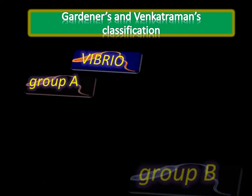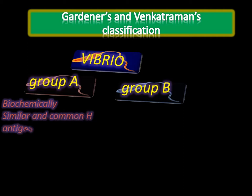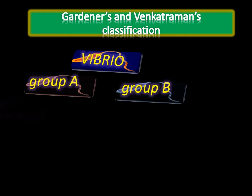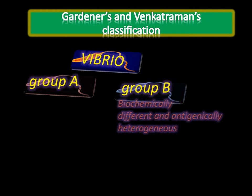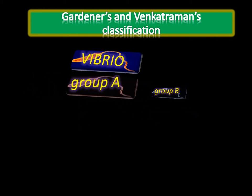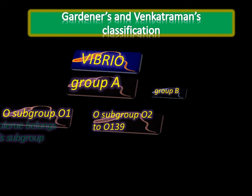In India, Gardner and Venkatraman classification is followed. Vibrio is divided into two main groups, group A and group B. Group A consists of biochemically similar organisms with a common H antigen. Group B consists of biochemically and antigenically heterogeneous antigens. Group B is not important. Group A consists of Vibrio cholerae.